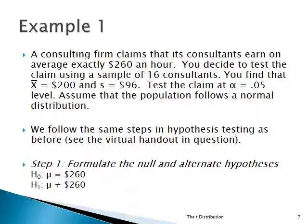Let's see the steps. The first step is you need H0 and H1. H0 is that mu equals $260 — that's the claim. And H1, remember this is a two-tail test because they use the word 'exactly,' so H1 is that mu is not $260.